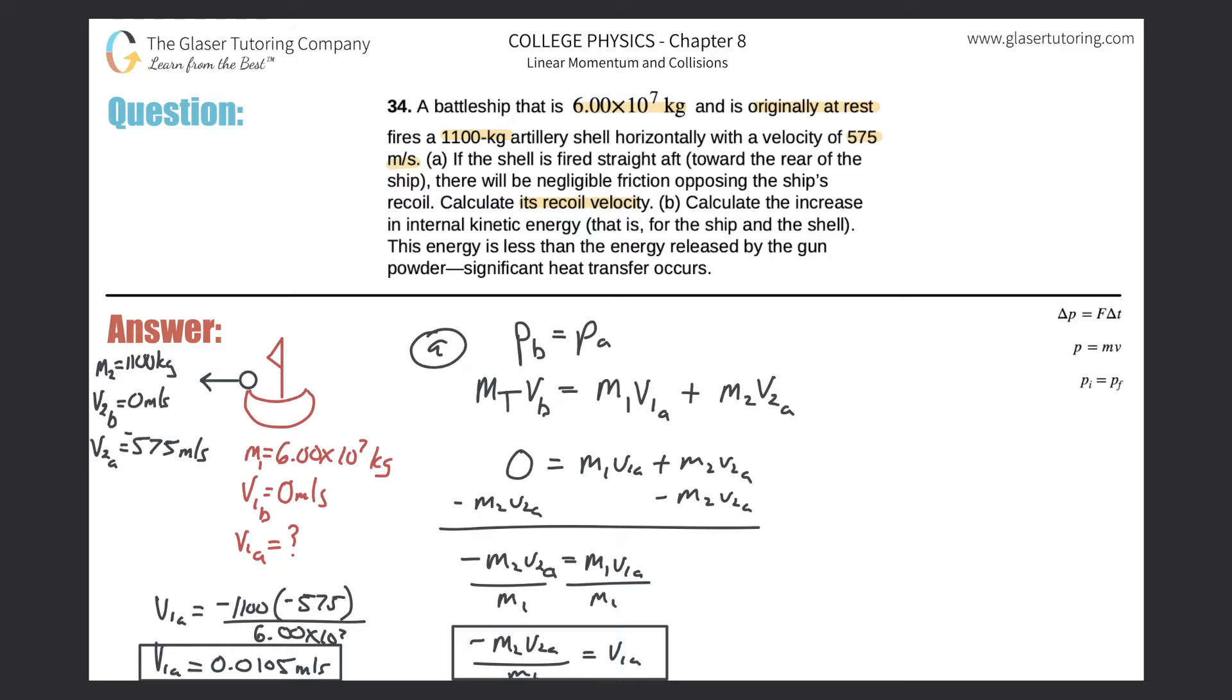Why don't we move on to letter B? Calculate the increase in internal kinetic energy for the ship and the shell. This energy is less than the energy released by the gun powder; significant heat transfer occurs. So the last part you don't really need. What we need to try to figure out is the increase in internal kinetic energy. In order to find an increase in something, you don't even need to really think about a particular formula. But if you wanted to find out if something increased or decreased, you can basically come up with this formula. The kinetic energy or the amount of increase should equal the final value subtracted by the initial value.